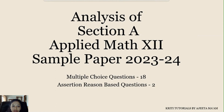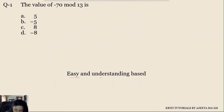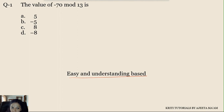The first question is based on the first unit and is simply based on understanding. It is an easy question based on congruence modulo. The question is: the value of -70 mod 13 is what? So we have to find the value of -70 mod 13. We simply have to find the remainder.